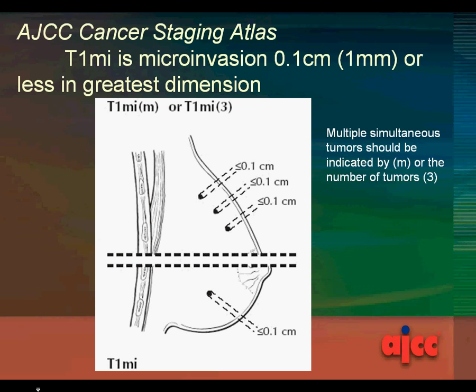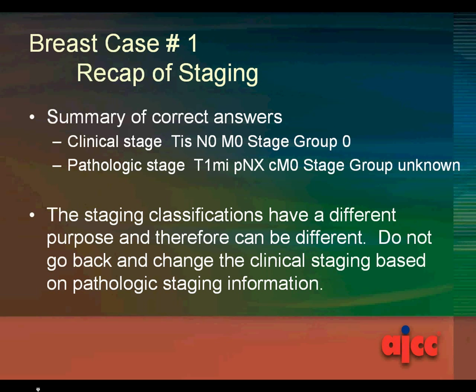Here is an image of T1mi from the AJCC Cancer Staging Atlas. To recap the staging: the clinical stage is TIS-N0-M0, stage group 0. The pathologic stage is T1mi-pNX-cM0, stage group unknown. The staging classifications have different purposes and therefore can be different. Do not go back and change the clinical staging based on pathologic staging information.